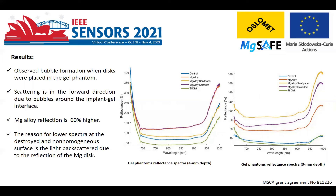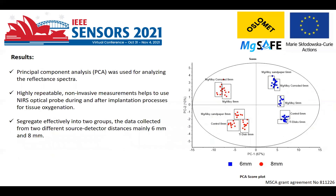On the other hand, when we are far from the implant tissue interface, as shown in the second figure, the reflection was higher for magnesium alloy sandpaper because more bubbles were present there. We have used principal component analysis to analyze the reflectance spectra. The data collected from two different source detector distances, mainly 6 millimeter and 8 millimeter, aggregated effectively into two groups, and it can also be used during and after the implantation process for tissue oxygenation as well.